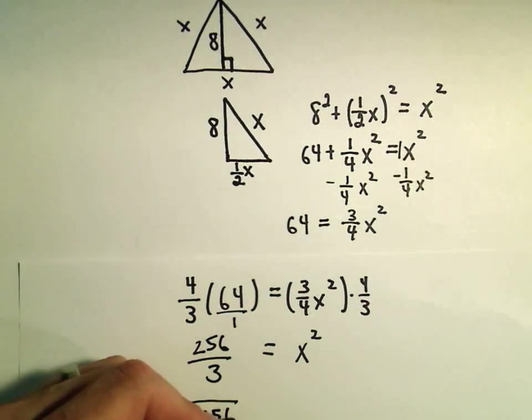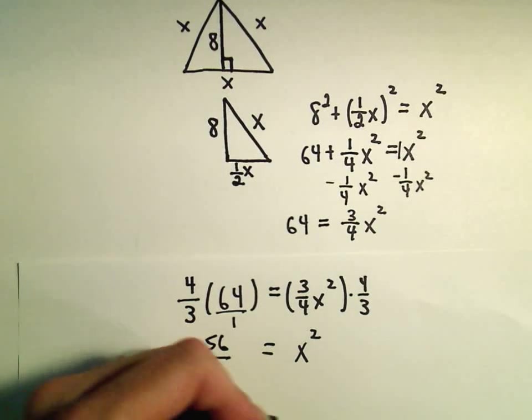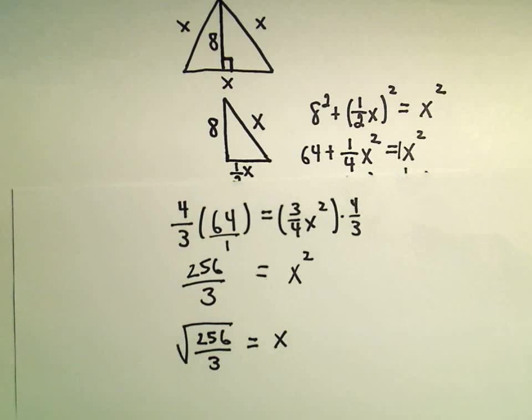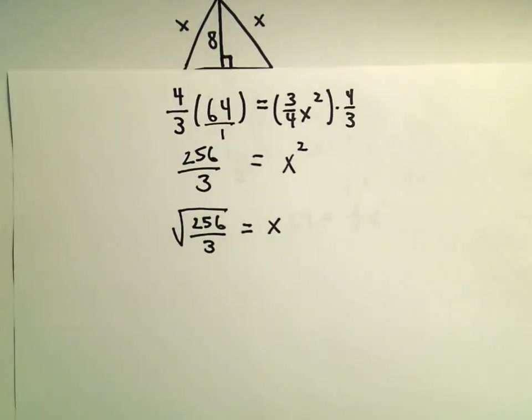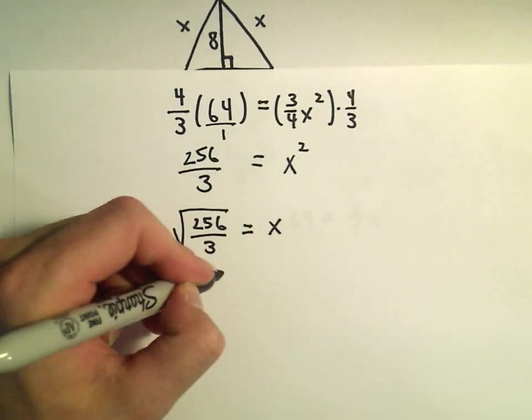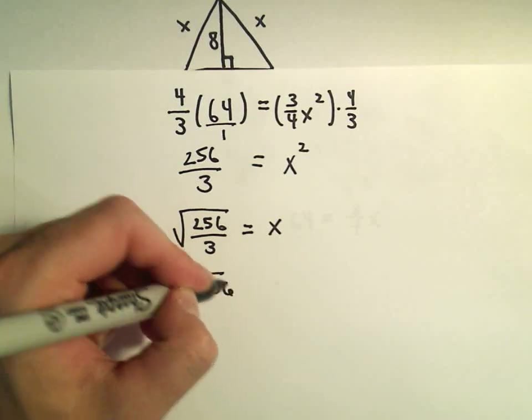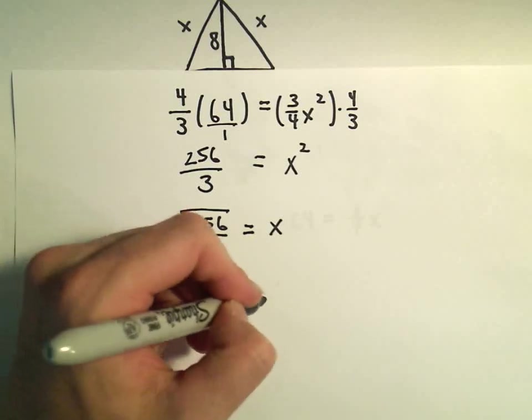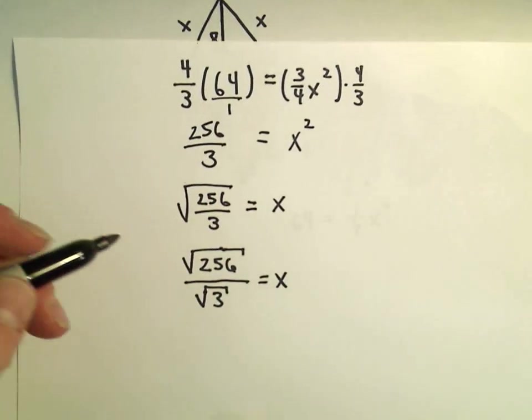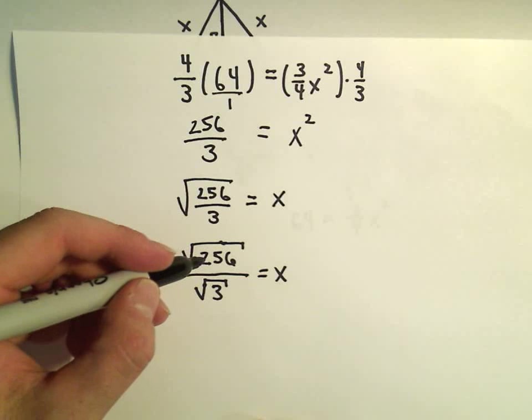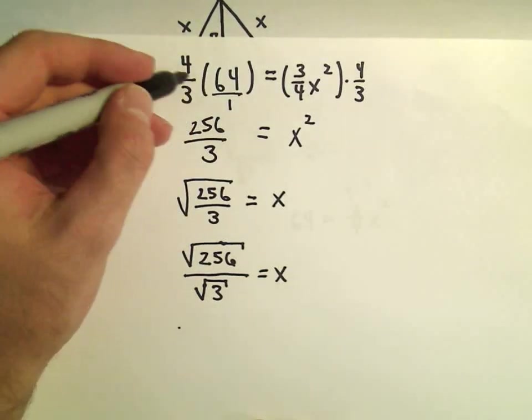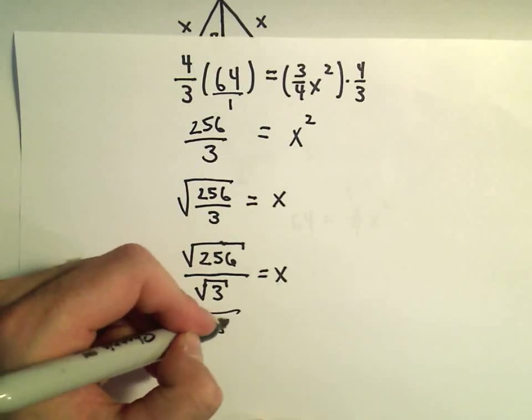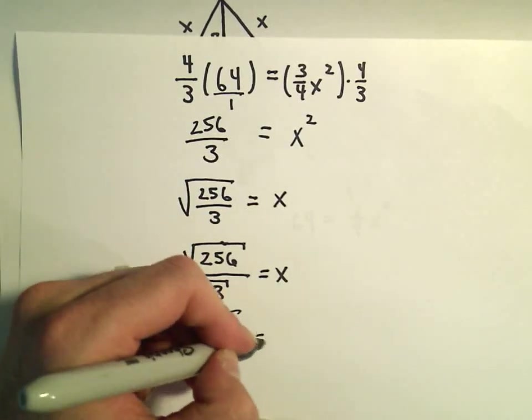Again, normally we get positive and negatives when we do square roots. But since x has to be a length here, it's definitely going to have to be something positive. And what I'm going to do here is I'm going to simplify this down a little bit. So we have the square root of 256 over the square root of 3 equals x. We know what two numbers multiply together to give us the square root of 256. So that was 4 times 64 over the square root of 3.